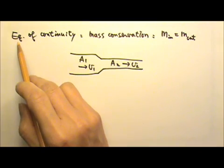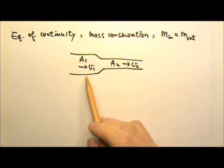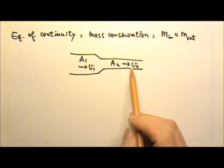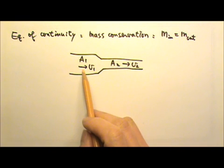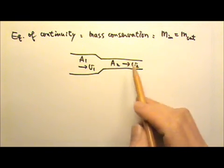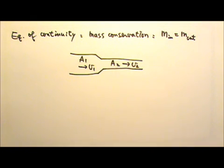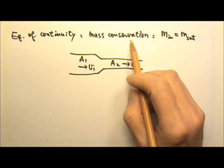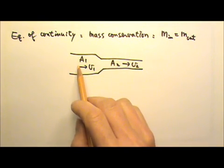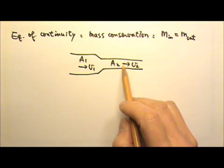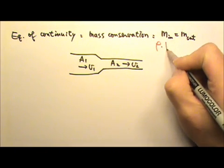Then we talked about the equation of continuity, which comes from mass conservation. For example, if we have a fluid that flows through a pipe with a changing cross-sectional area, the speed of flow is V1 in one section and V2 through the other section. According to mass conservation, the mass flowing in per unit time would equal the mass flowing out. And the mass is the density times the volume.